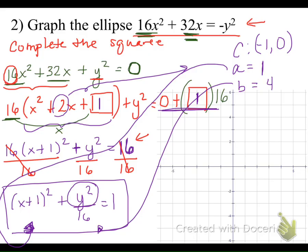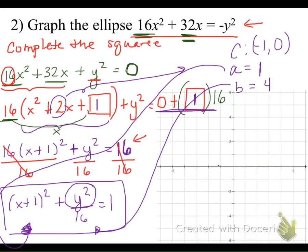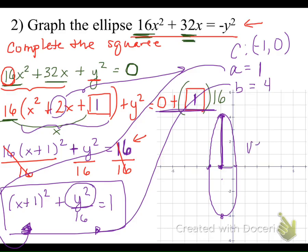Our ellipse has a center at (-1, 0). The horizontal distance is 1 unit, so we come out 1 unit to the right and 1 unit to the left. The vertical distance is 4 — 4 units up and 4 units down from the center — and we connect these into a nice, smooth ellipse. Notice this ellipse has a longer distance in the vertical direction, so we call this a vertical ellipse. If that longer distance were horizontal, we would call it a horizontal ellipse.